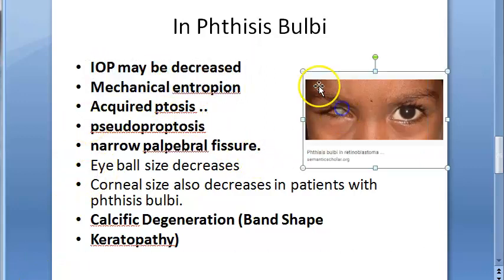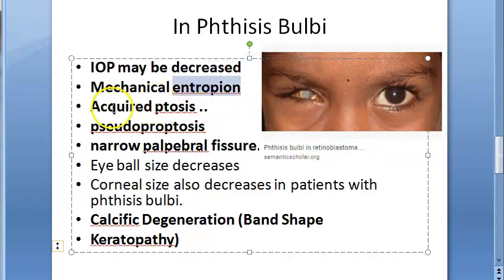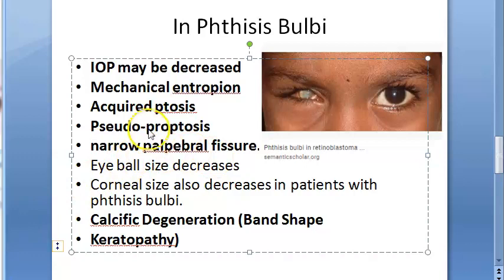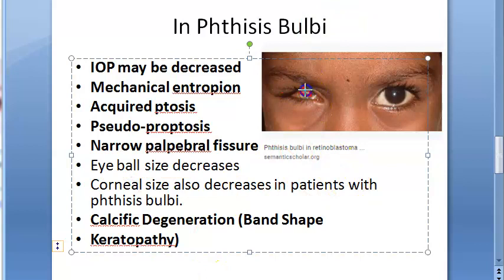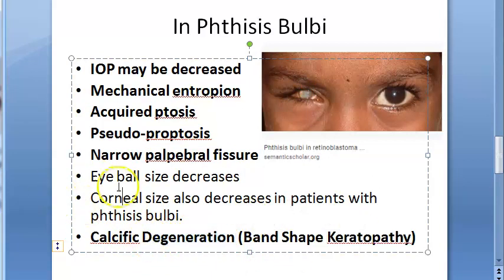In phthisis bulbi, the intraocular pressure may be decreased. There will be mechanical entropion — that is, in-folding of the eyelid. There will be acquired ptosis, which is drooping of the upper eyelid. There is pseudo-proptosis: proptosis normally refers to exophthalmos or protrusion of the eyeball, but here the eyeball is actually shrunken, not protruding. There will also be a narrow palpebral fissure, and the eyeball size decreases, as does corneal size.